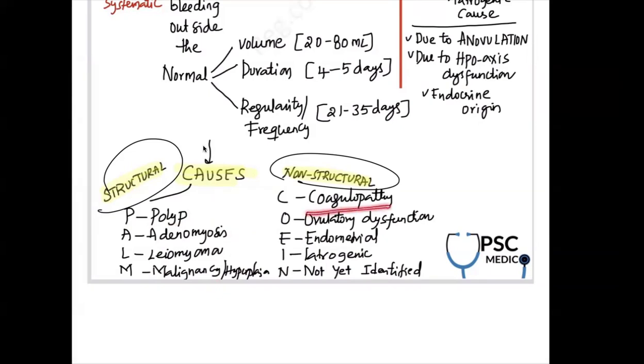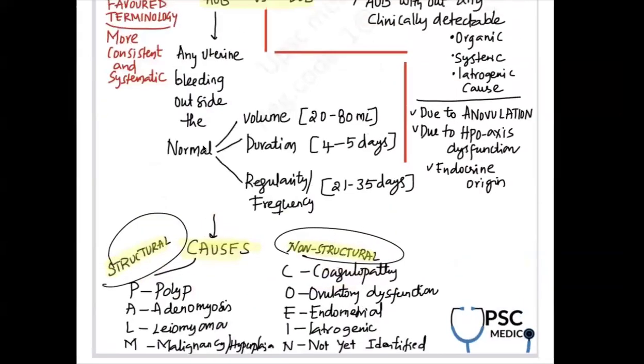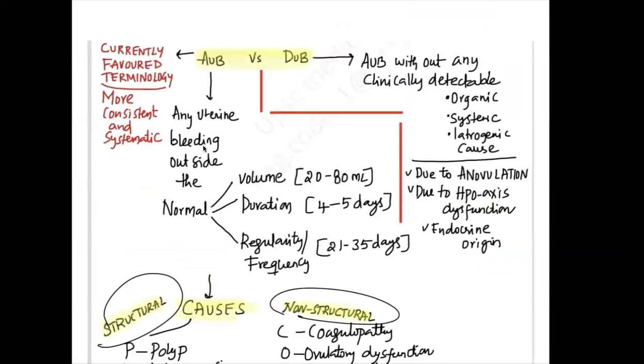Non-structural causes are coagulopathy, ovulatory dysfunction, endometrial causes, iatrogenic causes, and causes which are not yet identified are put in N. If you keep on getting more causes, then the classification, the mnemonic might change.